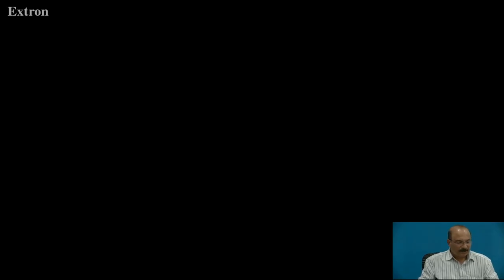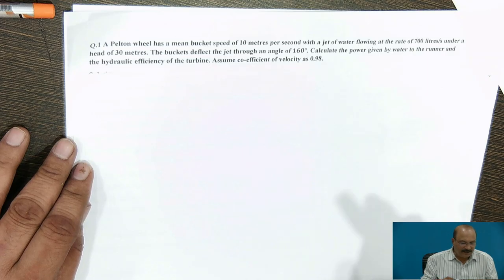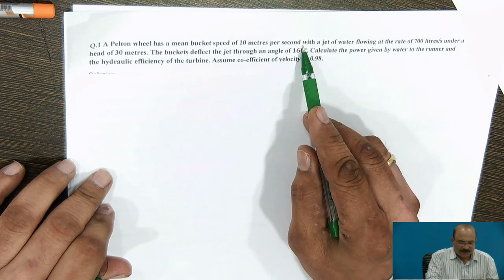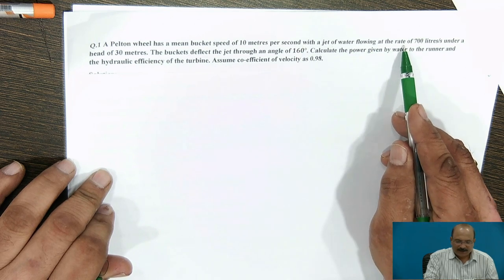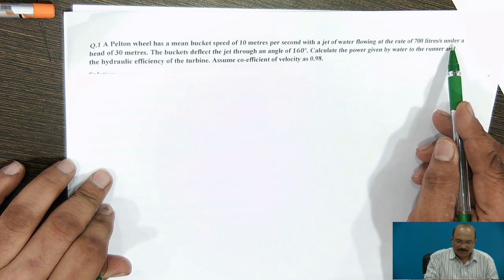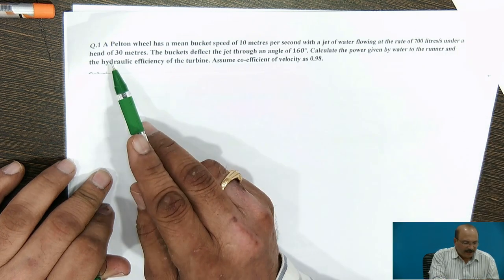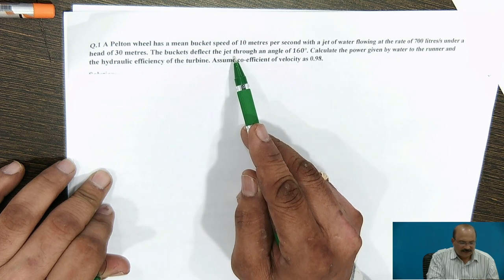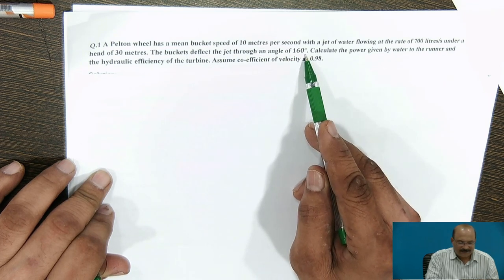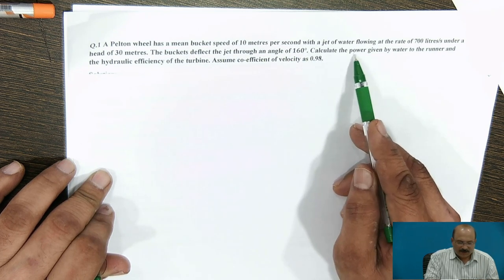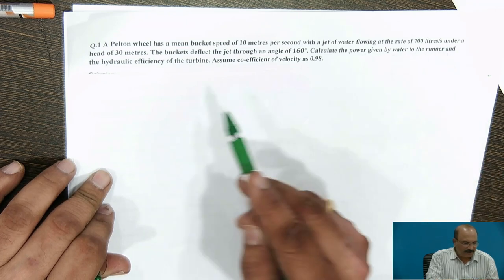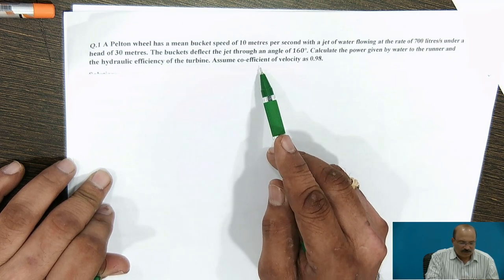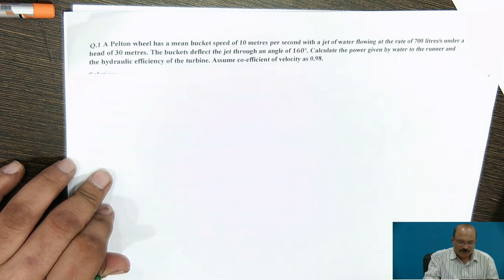A Pelton wheel has a mean bucket speed of 10 meters per second with a jet of water flowing at the rate of 700 liters per second under a head of 30 meters. The bucket deflects the jet through an angle of 160 degrees. Calculate the power given by water to the runner and the hydraulic efficiency of the turbine. Assume coefficient of velocity as 0.98.